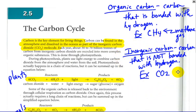Inorganic carbon is carbon that is not bonded with hydrogen. So an example of that would be carbon dioxide gas. As you can see, the carbon is bonded to two oxygens as opposed to hydrogens.